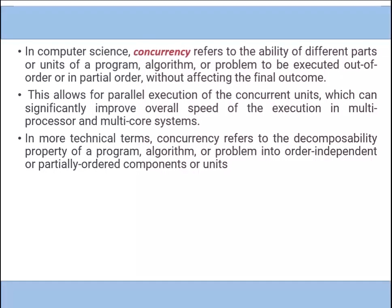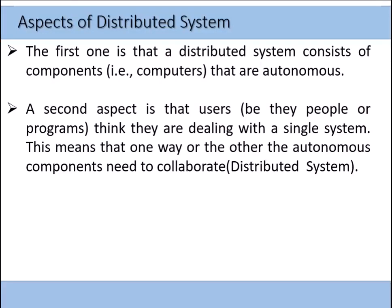There are different aspects of distributed systems. First, a distributed system consists of autonomous computers — each computer is an independent body with unique characteristics, so there is no homogeneity. Second, users who interact with the system perceive it as a single system; they do not feel they are dealing with different systems, and all components work as one whole system.